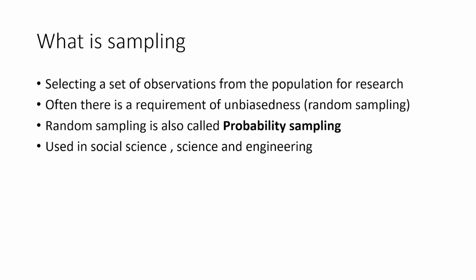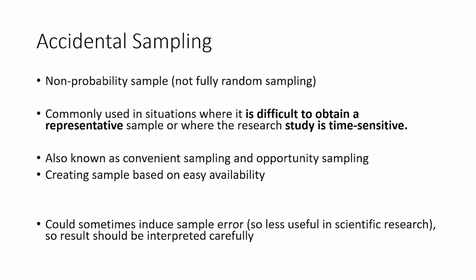Often there is a requirement of unbiasedness — that means when you create your sample from the population, you need to be unbiased, and hence random sampling is used. That means you randomly pick observations from the population to be in the sample for research. That requirement is strictly adhered to in many areas of research, but random sampling cannot be done in all kinds of problems. That's when you use accidental sampling. Random sampling is also known as probability sampling.